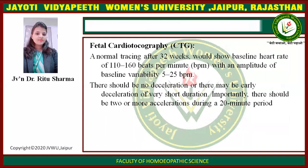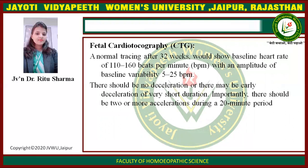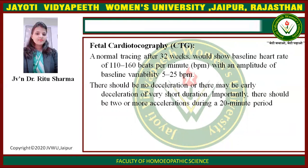Fetal cardiotocography: in a normal tracing after 32 weeks, there should be a baseline heart rate of 110 to 160 beats per minute, with an amplitude of baseline variability of 5 to 25 BPM. There should be no deceleration, or there may be early decelerations of very short duration. Importantly, there should be two or more accelerations during a 20-minute period.